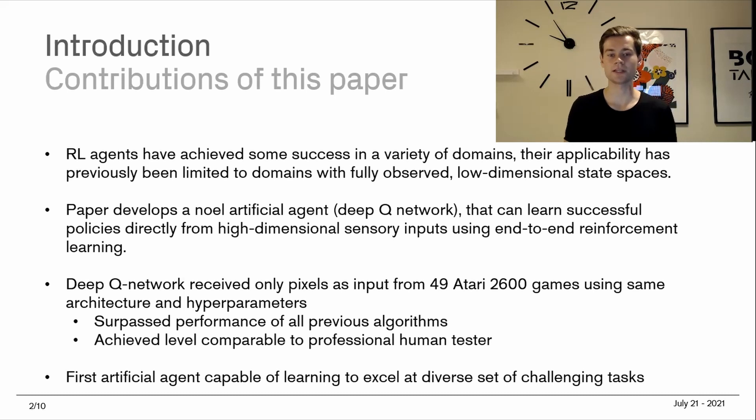The deep Q network received only pixels as input from 49 Atari 2600 games using the same architecture and hyperparameters. It surpassed the performance of all previous algorithms and achieved a level comparable to a professional human tester on these games.